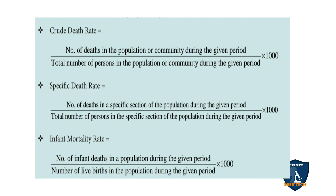Now we will see some of the important vital statistics or vital events. First is crude death rate. Crude death rate equals the number of deaths in the population or community during the given period, divided by the total number of persons in the population or community during the given period, multiplied by 1000.